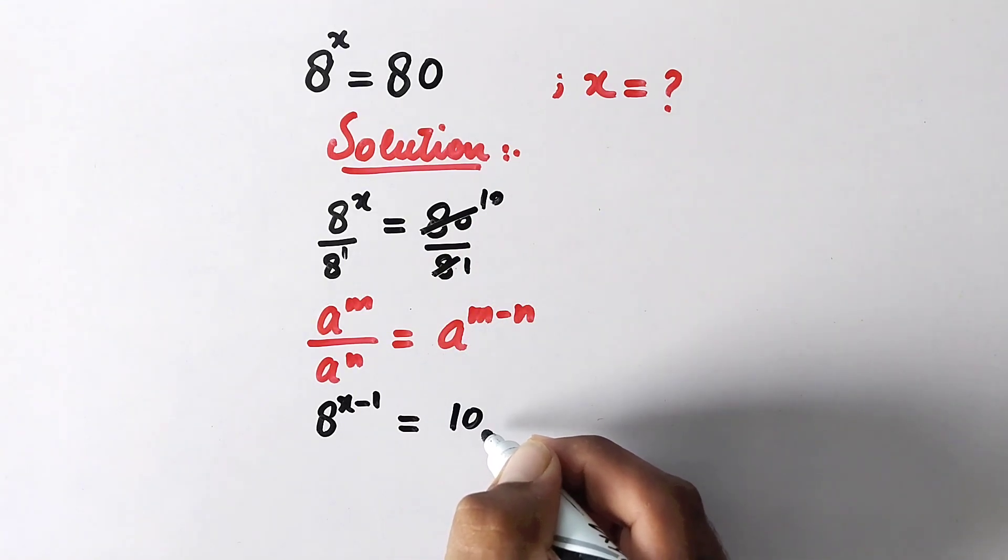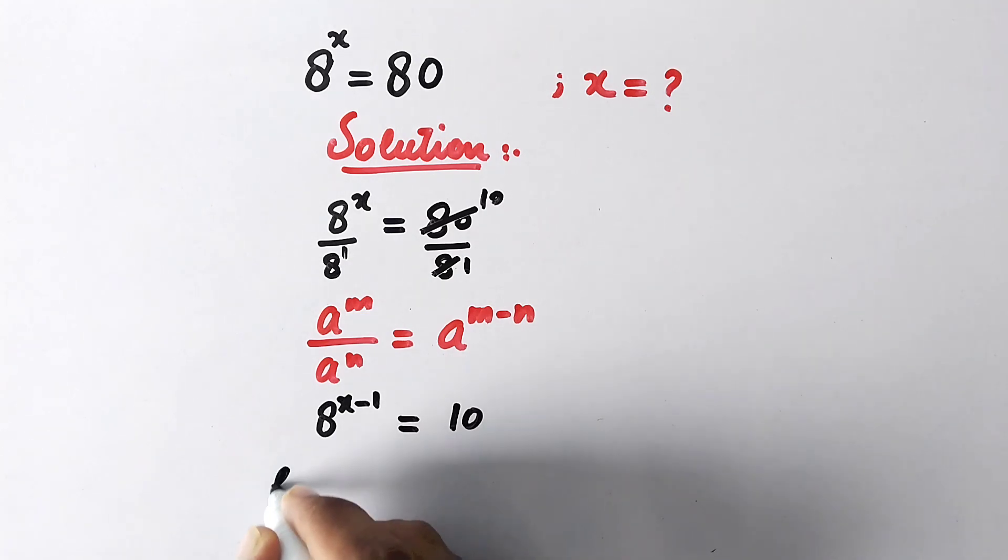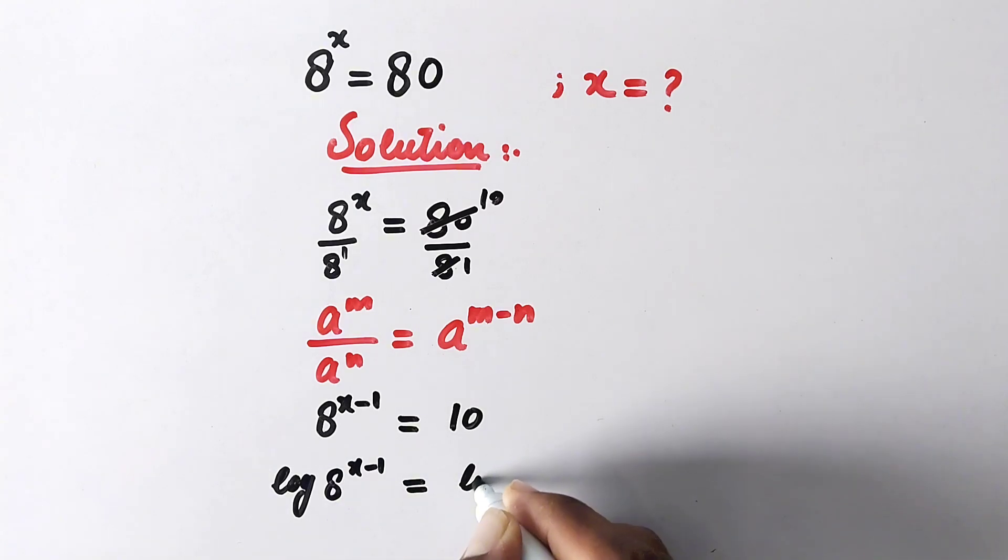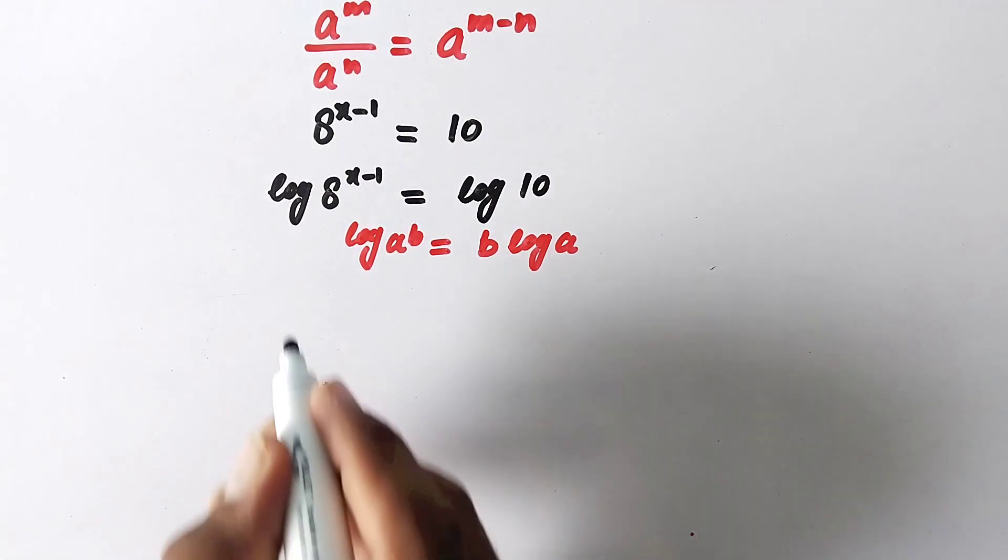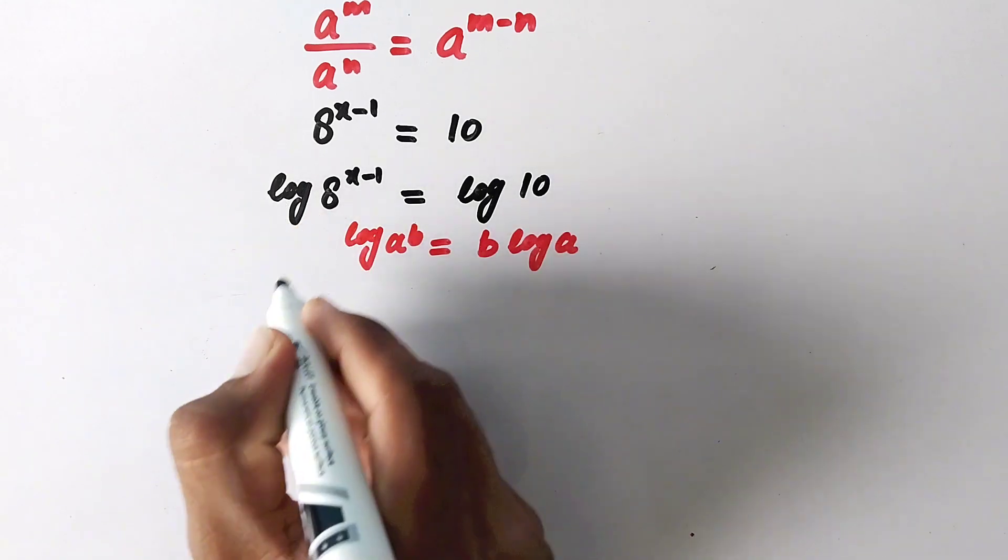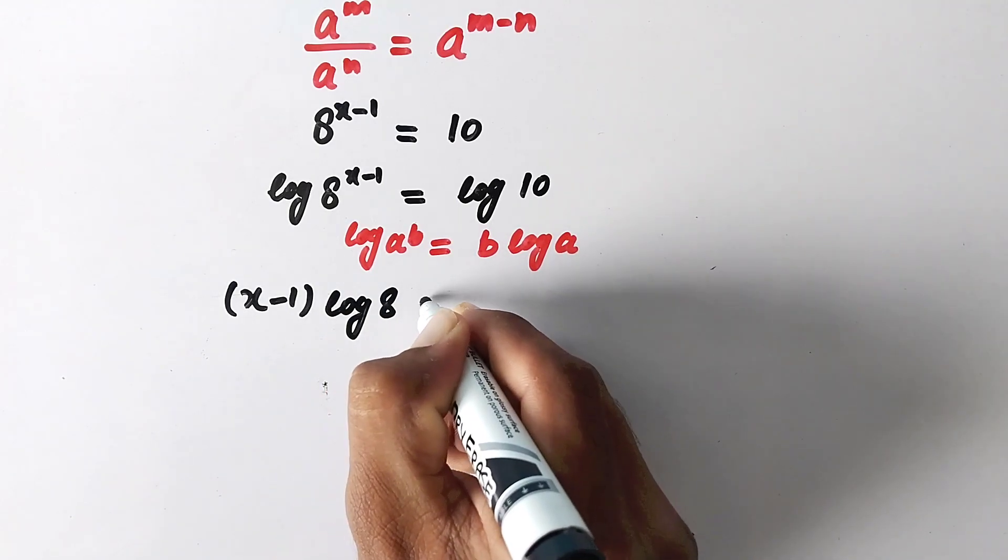Now what we will do next is take common log on both sides of the equation. So here it will be log 8 to power x minus 1 is equal to log 10. And as we know the property of log: log a to power b is equal to b times log of a. So now we will write this power before log: x minus 1 times log of 8 is equal to log of 10.